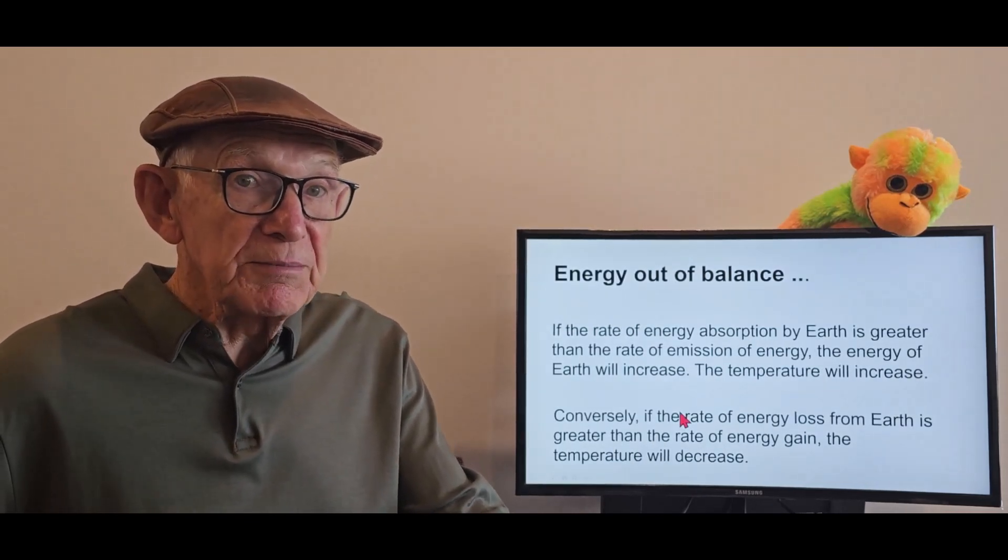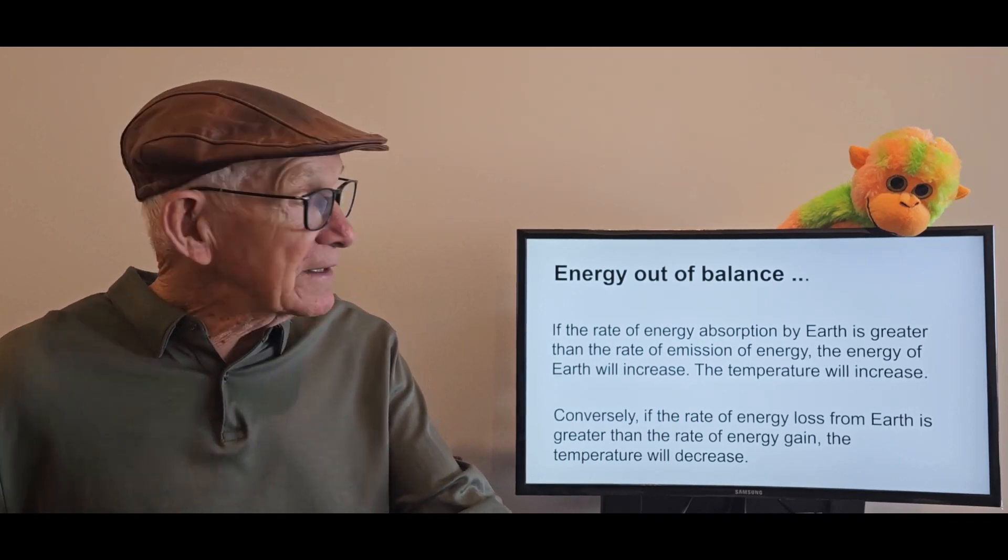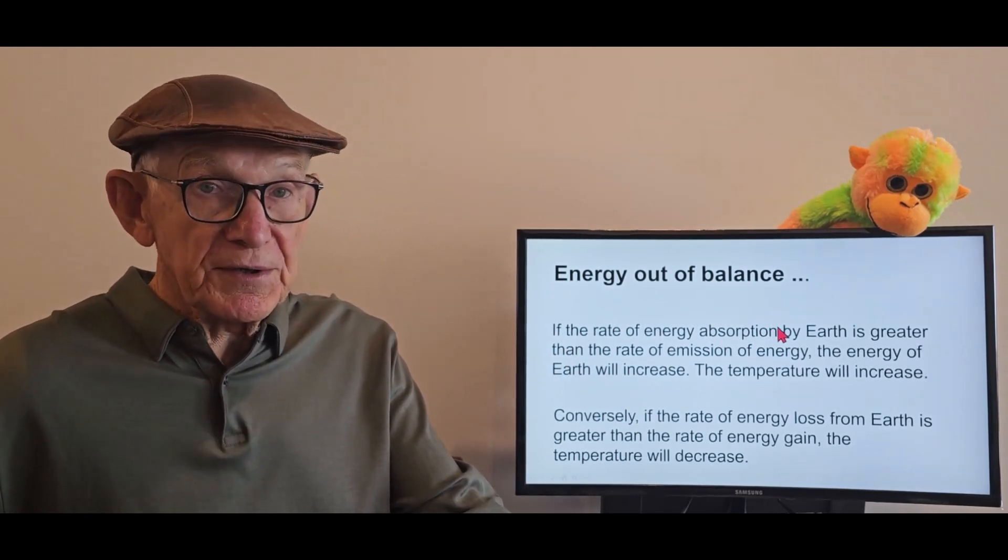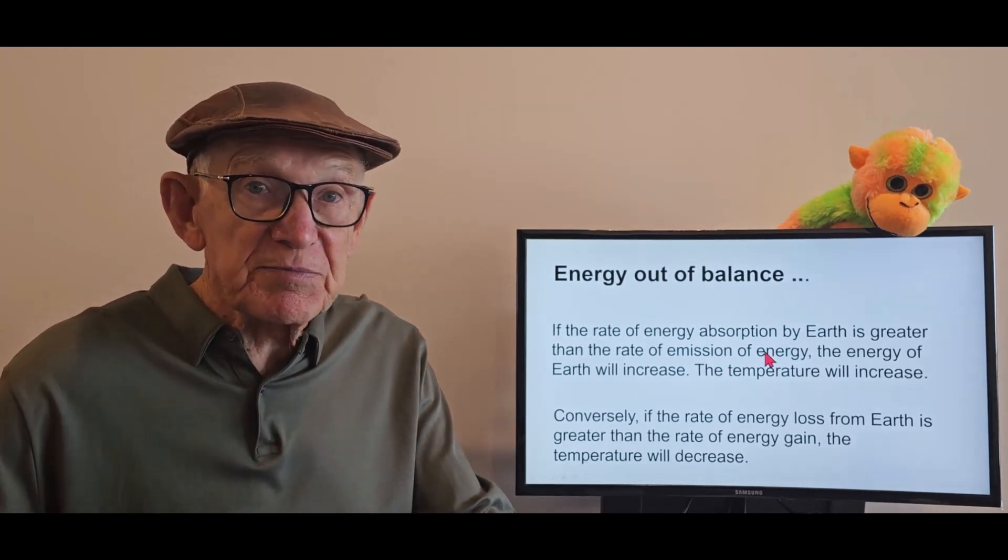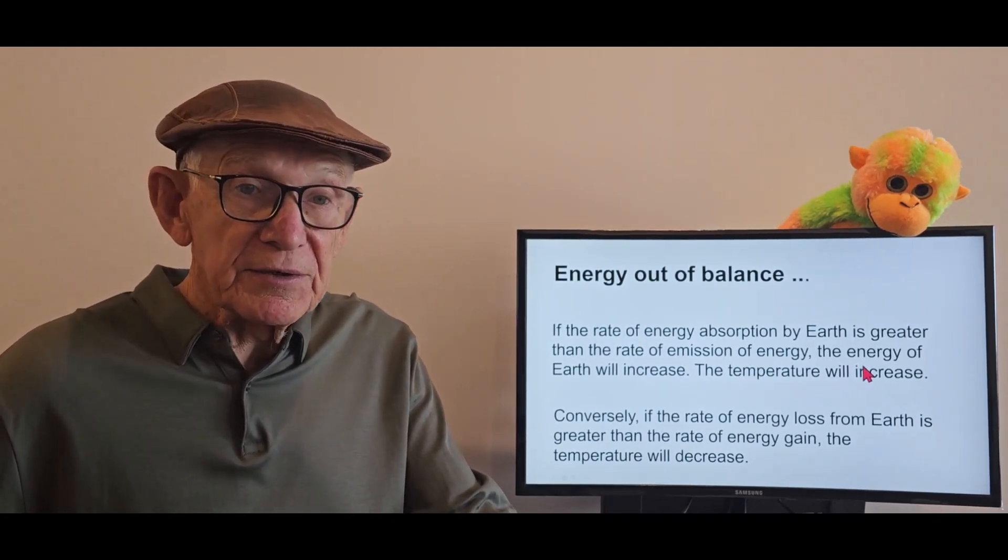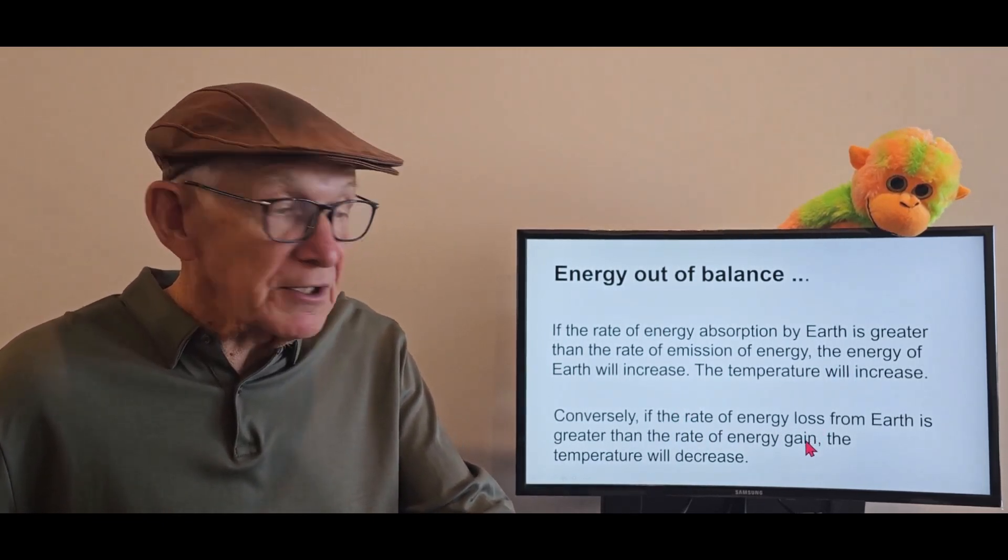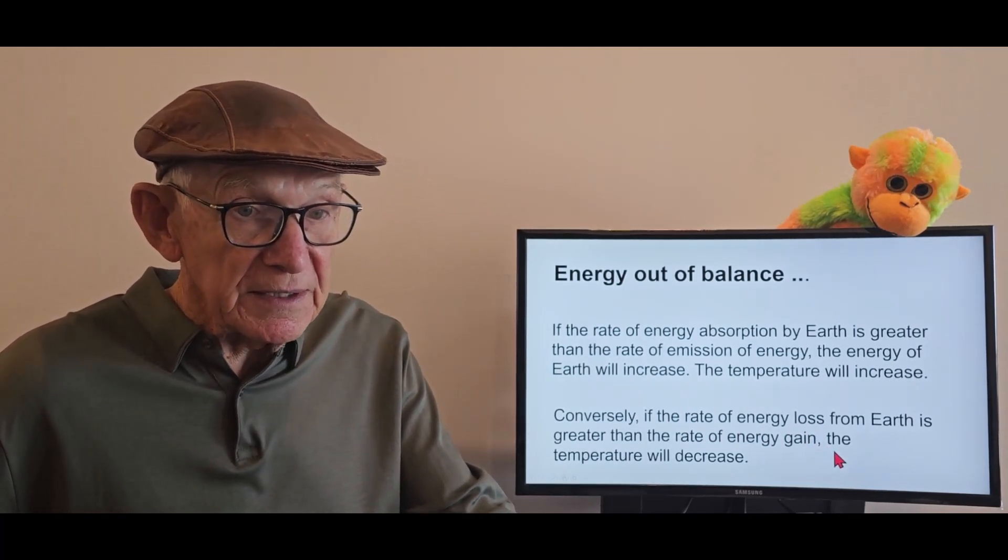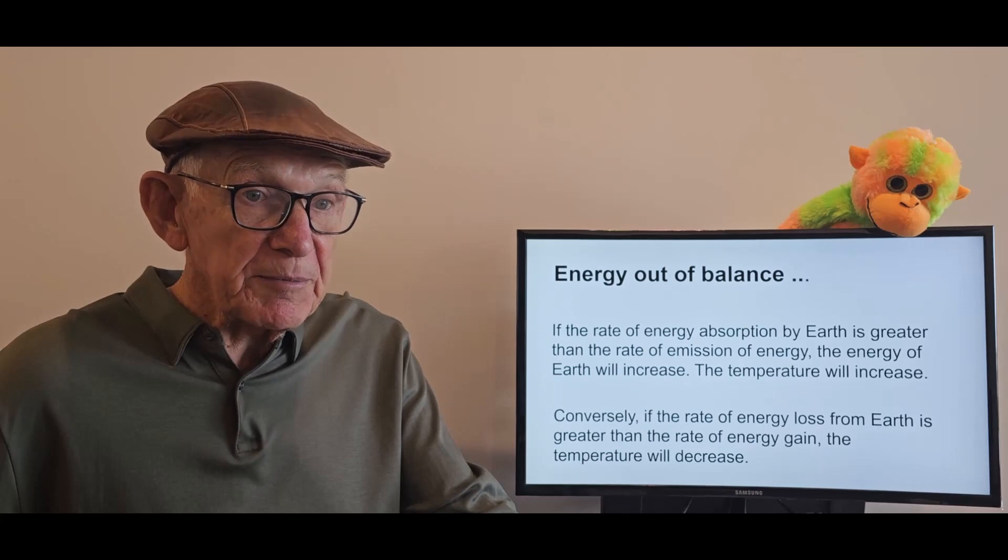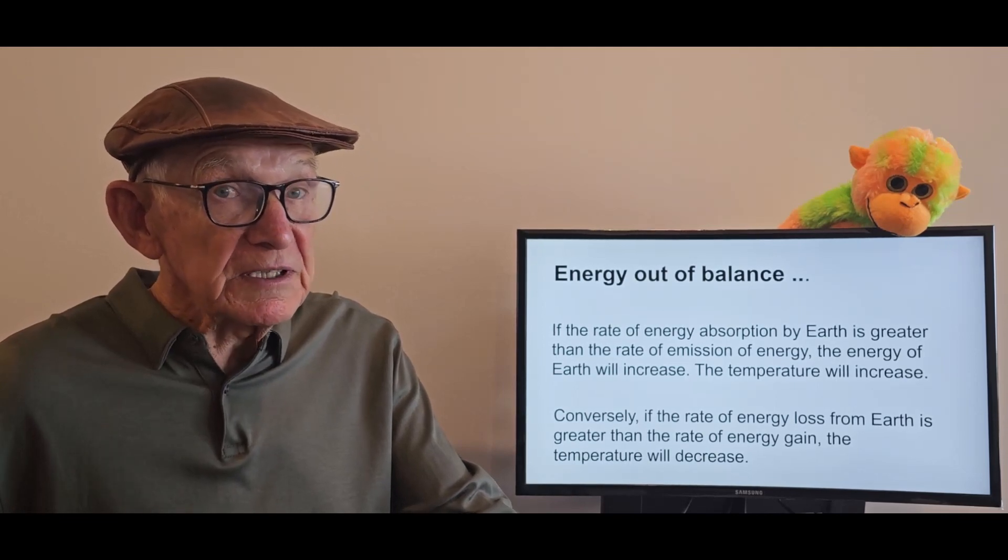Now, what about the condition where energy balance is not the state of being, energy of planet Earth is out of balance? That can happen in two possible ways. Either, if the rate of energy absorption by the surface of the Earth is greater than the rate in which energy is being lost by emissions, then the energy of the Earth will increase and the temperature will increase. There's an alternative. If the rate of energy loss is greater than the rate at which energy is being gained from the Sun, then the temperature will decrease. More is being lost than is coming in. I hope that makes sense. It's a pretty simple idea, so fundamentally important.